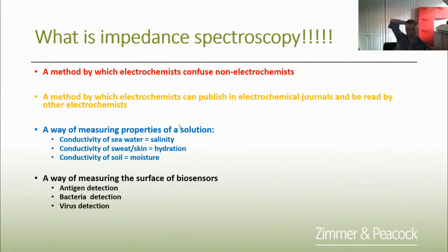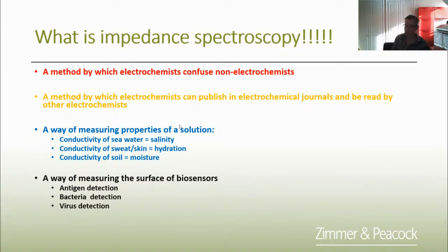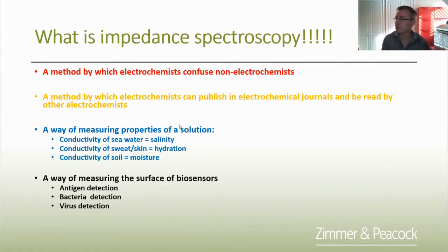Today we're going to do an introduction to impedance spectroscopy from the perspective of biosensing. I have some definitions here of impedance spectroscopy, and for me there's a real problem — it's quite confusing the way it's often taught. One of the definitions is it's a method by which electrochemists can confuse non-electrochemists. It's a good method by which electrochemists can be published in electrochemical journals and read by other electrochemists. I can see there are a lot of people joining us now.